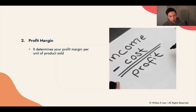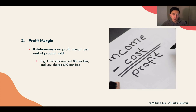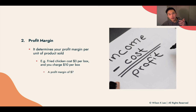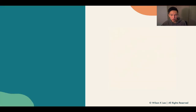Next up, profit margin. Knowing your COGS also helps you determine your profit margins per unit of product sold. For example, if fried chicken costs $3 per box to make and you charge $10 per box, your profit margin is $7. This also allows you to calculate your break-even moving forward.